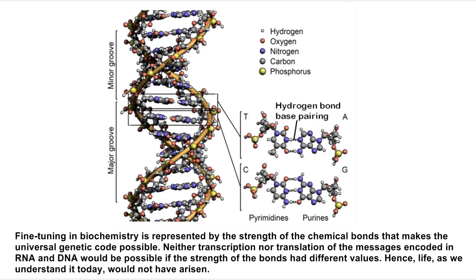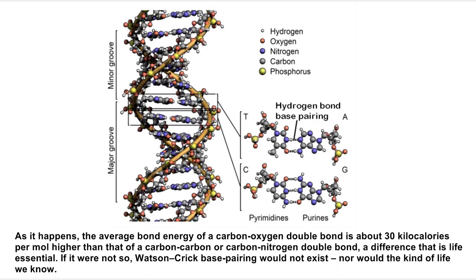Fine-tuning in biochemistry is represented by the strengths of the chemical bonds that make the universal genetic code possible. Neither the transcription nor translation of the messages encoded in RNA or DNA would be possible if the strengths of the bonds had different values — hence life as we understand it today would not exist. As it happens, the average bond energy of a carbon-oxygen double bond is about 30 kilocalories per mole higher than that of a carbon-carbon or carbon-nitrogen double bond — a difference that is life-essential. If it were not so, Watson-Crick base pairing would not exist, nor would the kind of life we know.